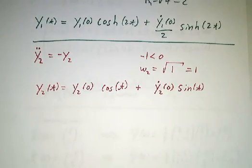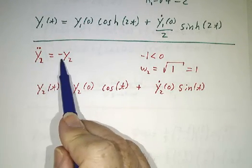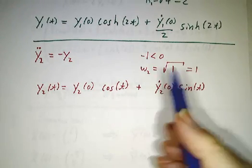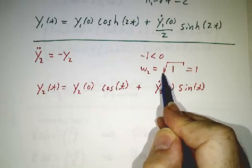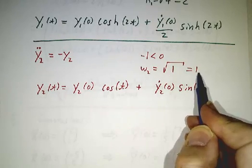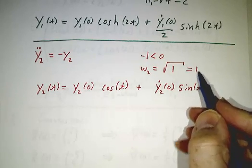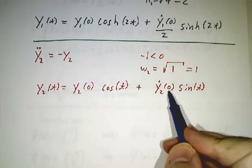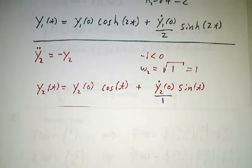The other equation has a negative. y double dot is minus y2, so the coefficient of negative 1 is less than 0, and our frequency is the square root of minus that, so the square root of 1, which is 1. So we get cos and sin. Initial value times the cos plus initial velocity divided by ω times the sin. Of course, dividing by 1 doesn't do very much.